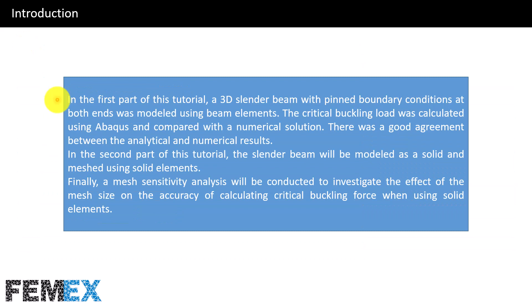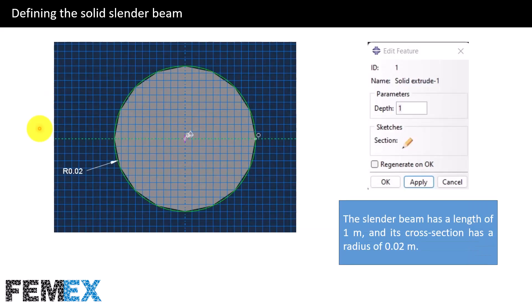In the first part of this tutorial, a 3D slender beam with pinned boundary conditions at both ends was modeled using beam elements. The critical buckling load was calculated using Abaqus and compared with an analytical solution — there was a good agreement. In the second part, the slender beam will be modeled as a solid and meshed using solid elements. Finally, a mesh sensitivity analysis will be conducted to investigate the effect of mesh size on the accuracy of calculating the critical buckling force.